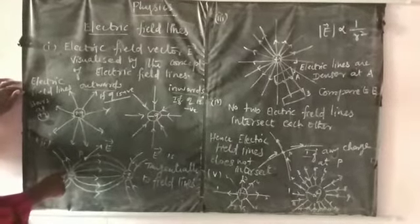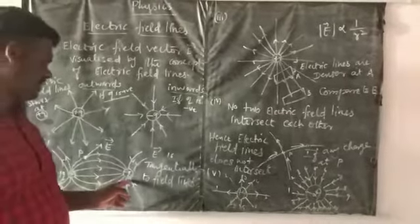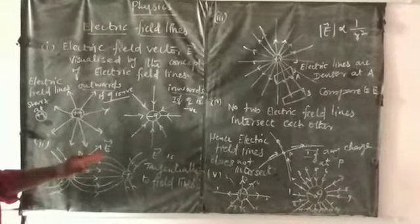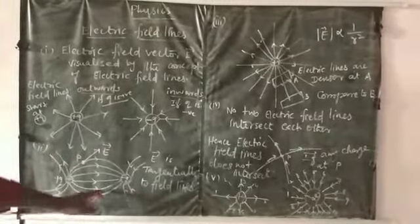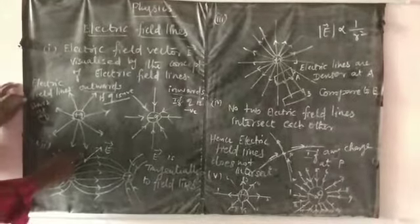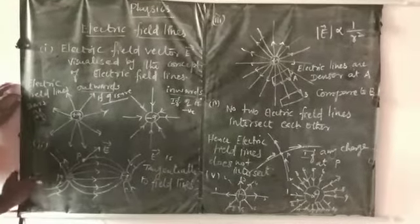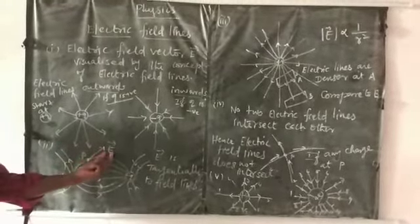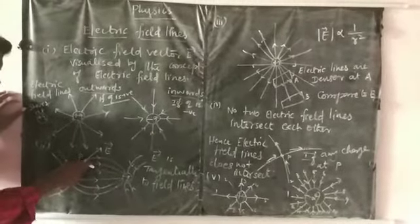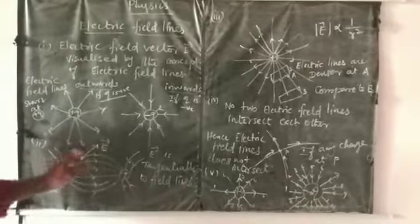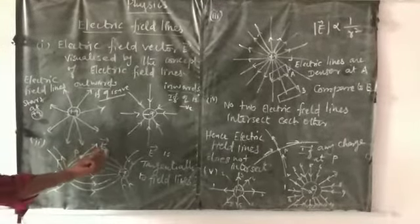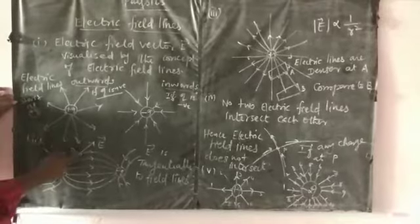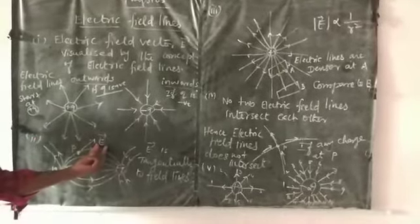Electric field lines start from the positive charge and terminate at the negative charge. The electric field vector at a point P is tangential to the direction of the electric field lines. So, the tangent to the electric field line at a particular point gives the direction of the electric field vector at that point.